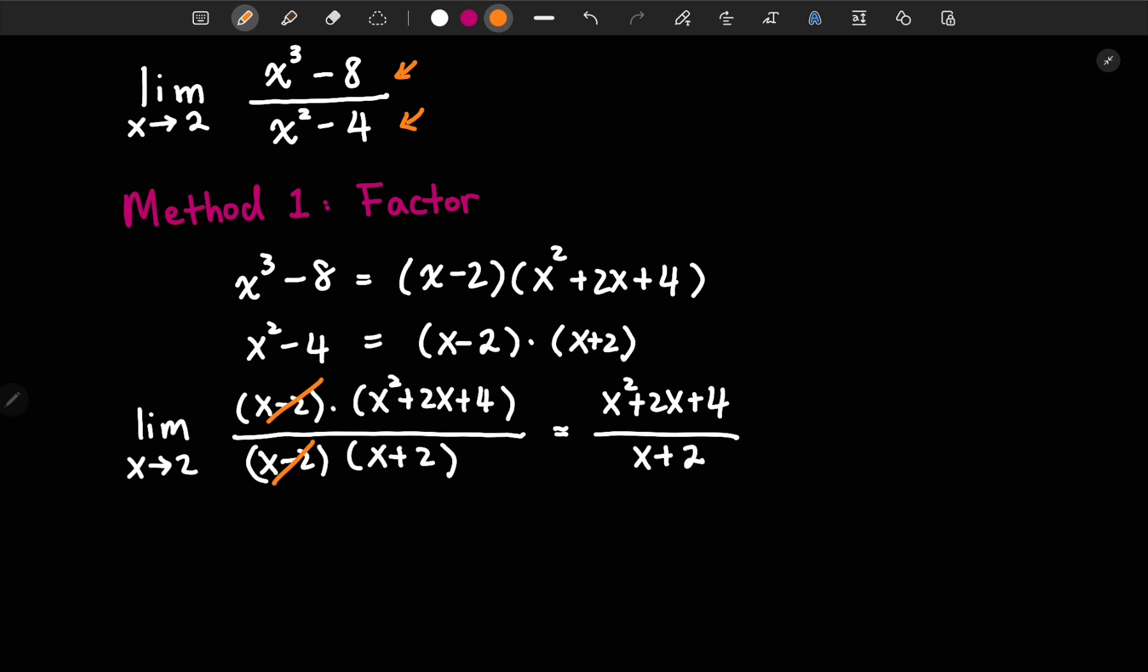Now let's plug in x equal to 2 and see what happens. Then we get 2 squared plus 2 times 2 plus 4 over 2 plus 2.